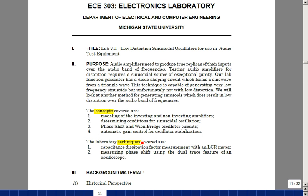The concepts that we covered were modeling the inverting and non-inverting amplifier, conditions for oscillations, a phase shift and a Wien bridge oscillator, and the idea of automatic gain control for oscillator stabilization. We're reviewing the techniques of dissipation factor measurement using an LCR meter, and then we're going to learn how to measure phase shift using the dual trace feature of the oscilloscope. And this is lab 7, a low-distortion sinusoidal oscillator for use in audio test equipment.